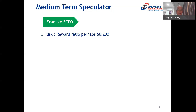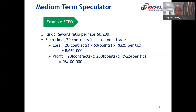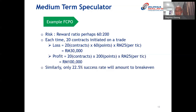Let's look at some figures. If you go in with 20 contracts per trade and the market hits 60 points against you — 20 contracts × 60 points × 25 ringgit — you could lose 30,000 ringgit. On the upside, if it goes your way: 20 × 200 × 25 = 100,000 ringgit profit. The success rate required to break even is similar to the scalper — around one out of four trades.